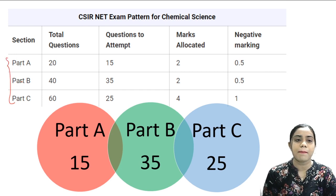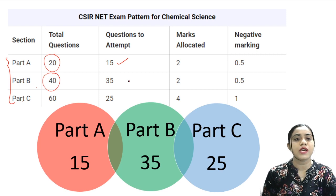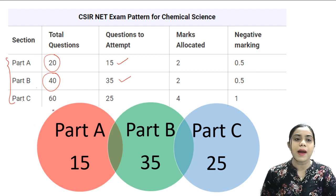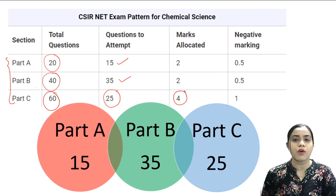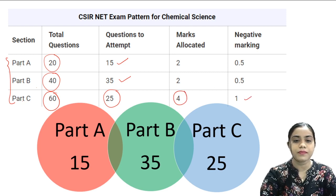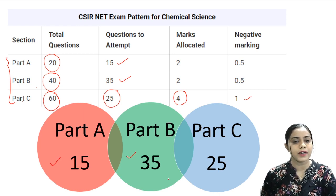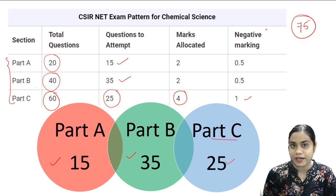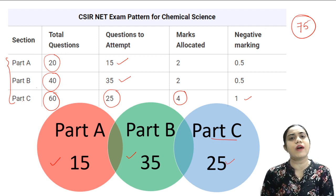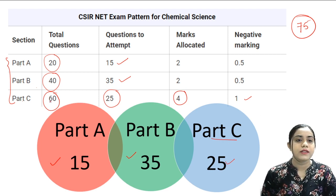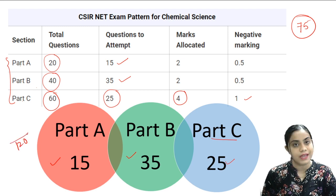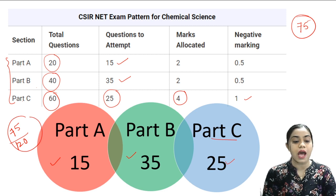In summary: Part A contains 20 questions, attempt any 15; Part B contains 40 questions, attempt any 35, each carrying two marks with a negative marking of 0.5; Part C contains 60 questions, attempt only 25, each carrying four marks with a negative marking of one. In total there are 120 questions in the exam and you must attempt 75 out of 120.